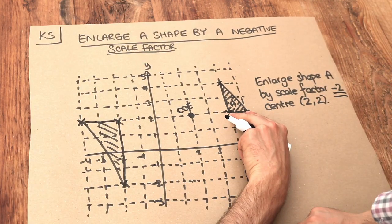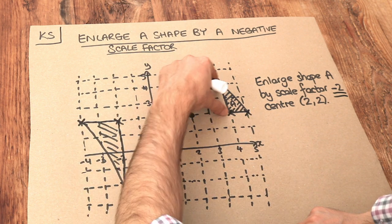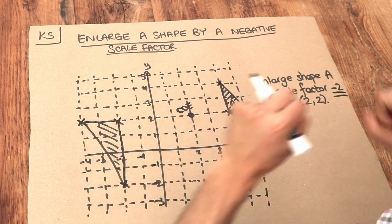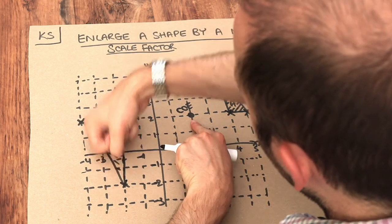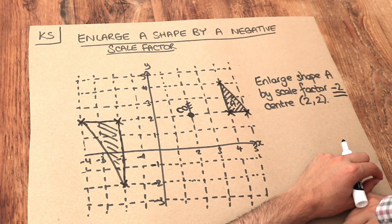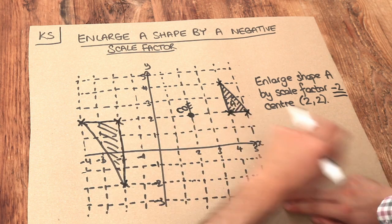So it's become twice as big because, look, the width of 1 has become a width of 2. The height of 2 has become a height of 4. So it's twice as wide, twice as tall. But it's also rotated around that centre of enlargement as well and got further away from the centre of enlargement.